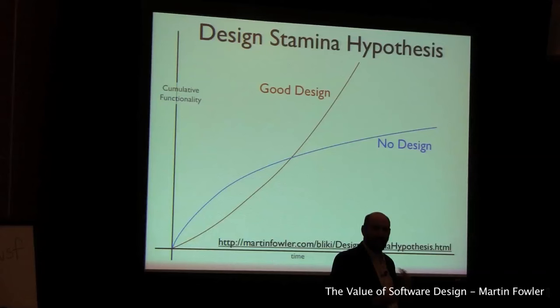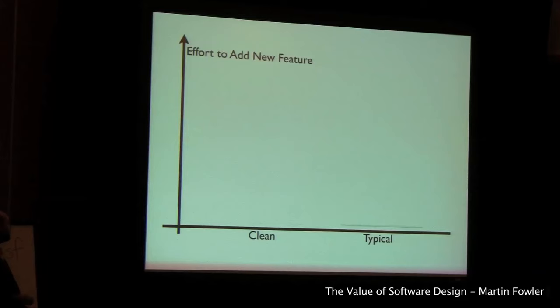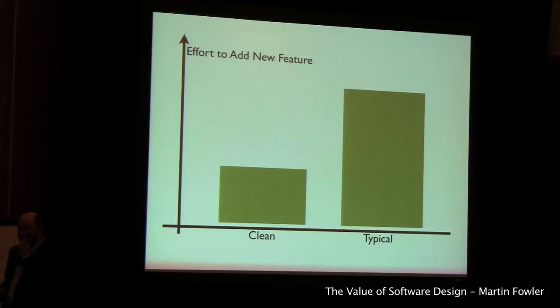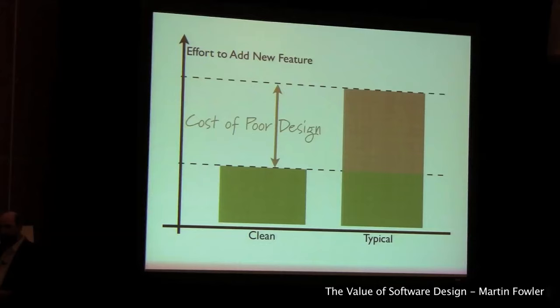Most software developers I know have also seen this difference. Another way of thinking about the design stamina hypothesis: if I want to add a new feature, with clean code the cost is much less than with not-so-well-done code. When I want to add a new feature, there's a cost due to poor design — every time I add a new feature it costs more than it ought to. You feel this any time you say, 'it really ought to be easy to add this new feature, but I've got to do this and this and this before I can add it.' That's that difference coming in.